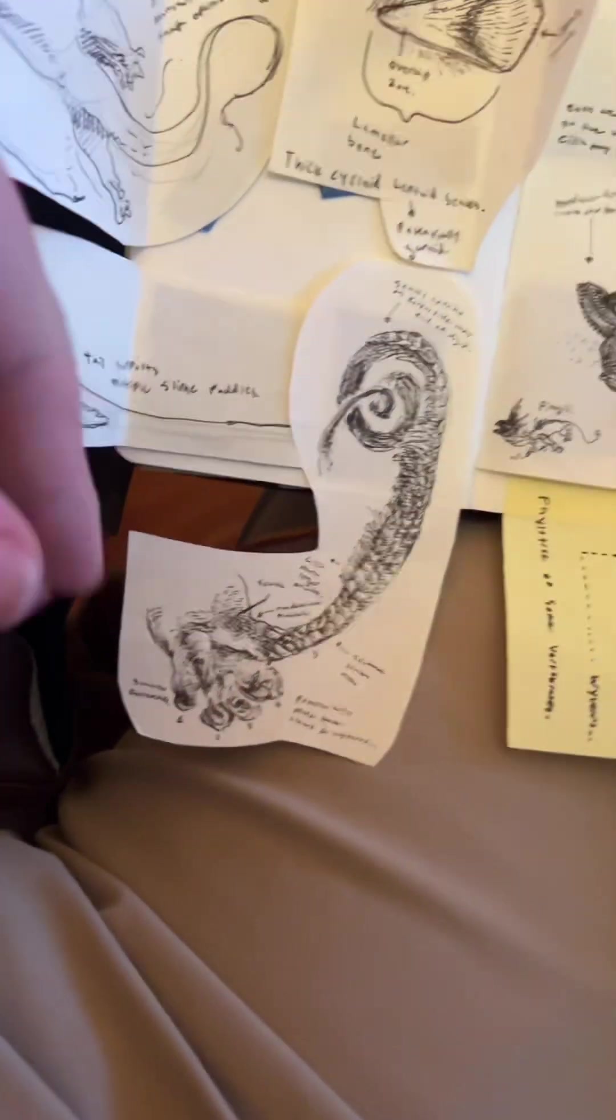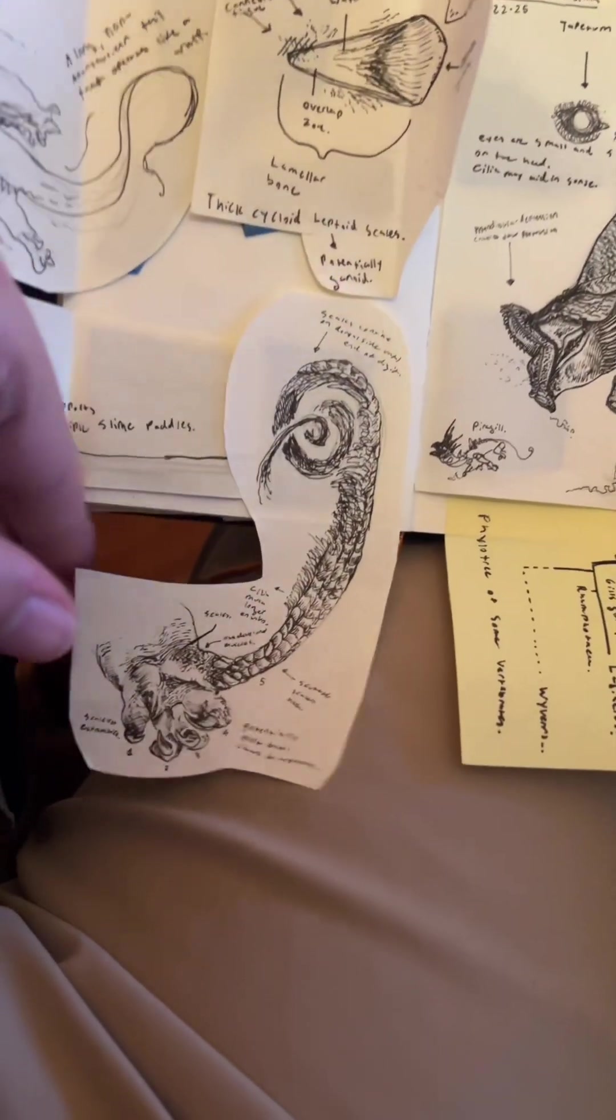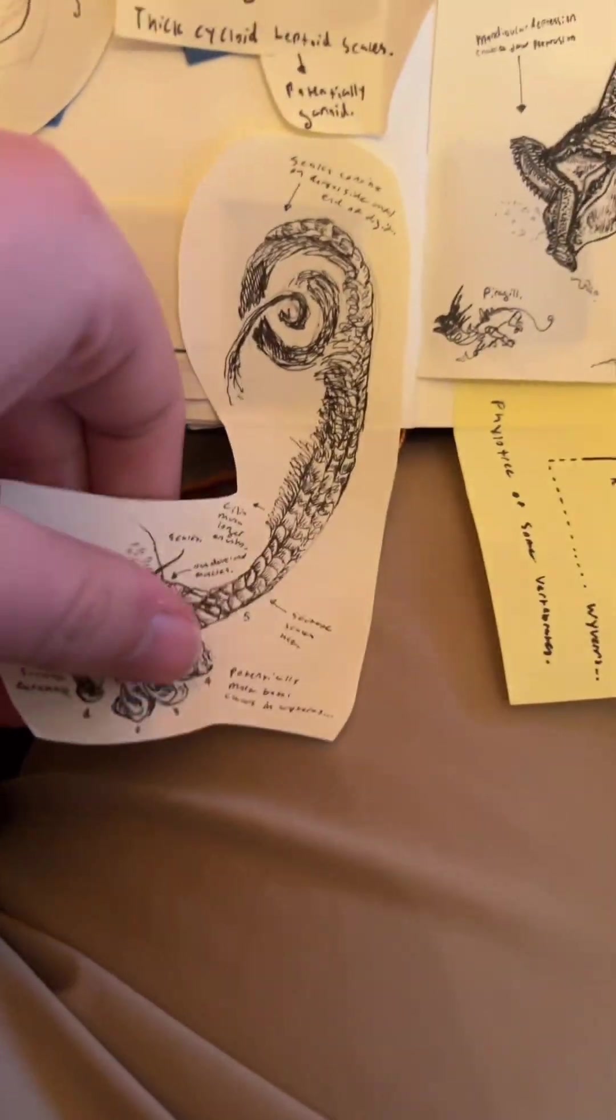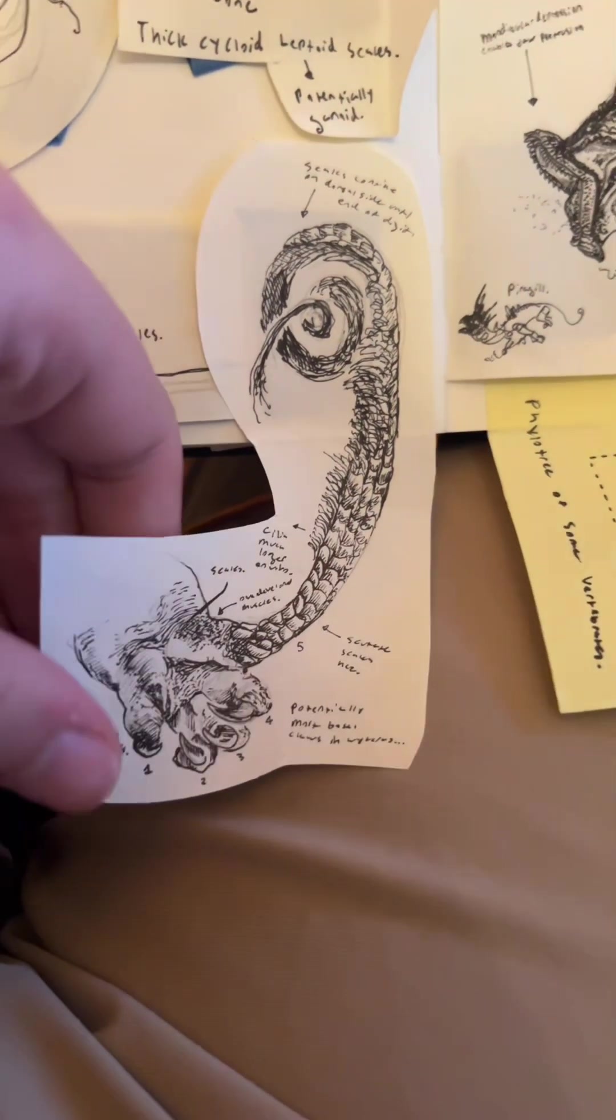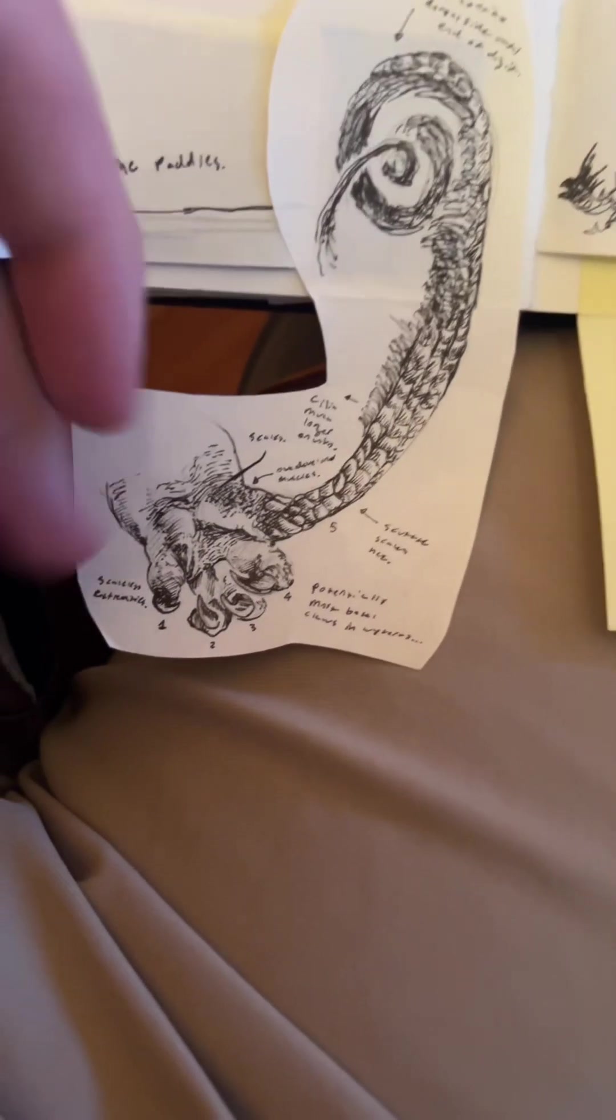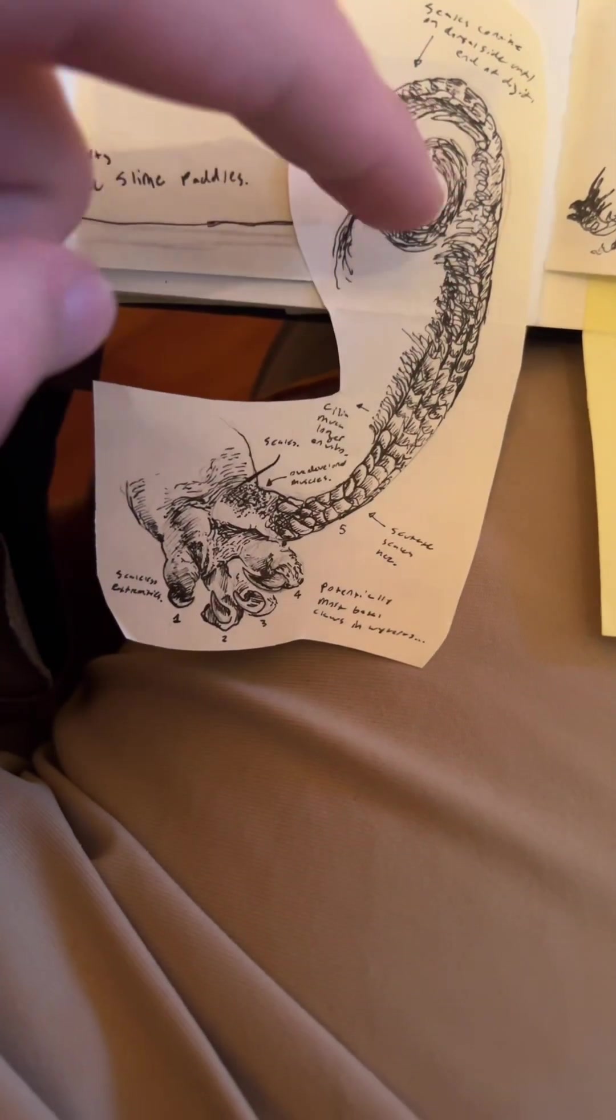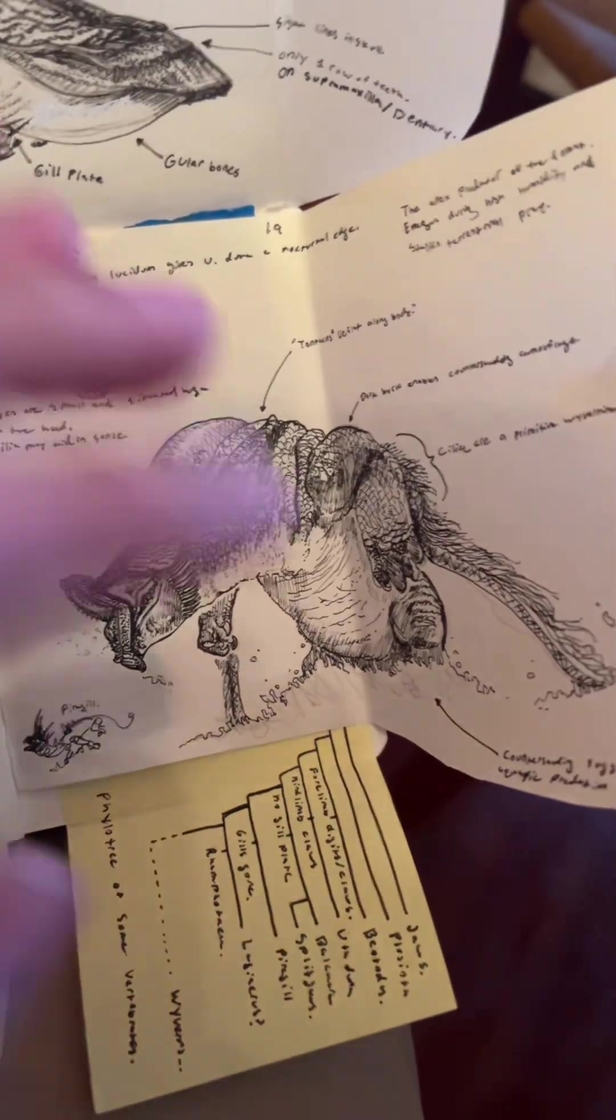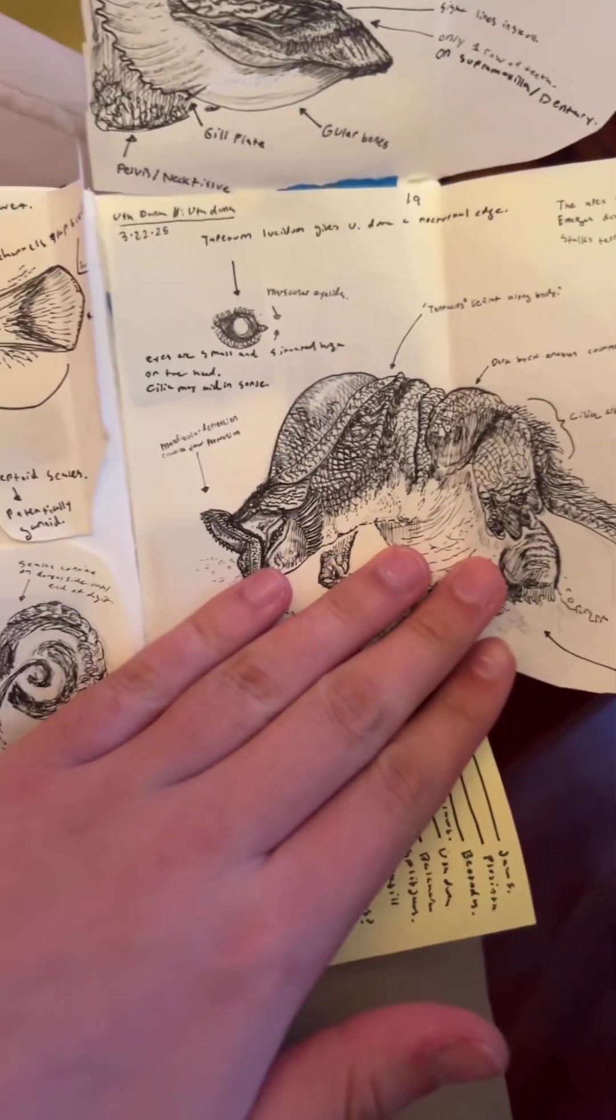The big thing of note that is kind of contradictory about Uth Duna as an animal is that it has really highly developed fore and hind limbs with fully formed claws on them. It has five digits on each of them. This long extending digit is a true finger, and its hind limbs are also very well developed in a way that is similar to modern four-legged animals.